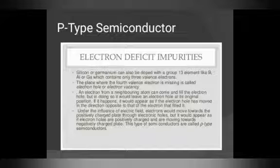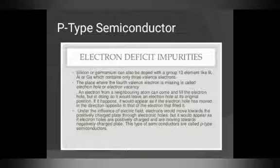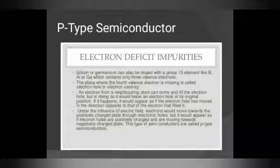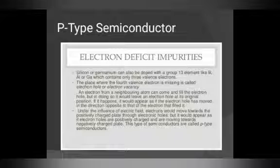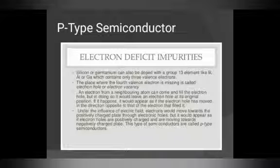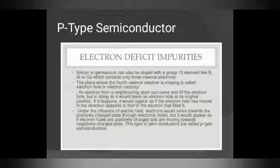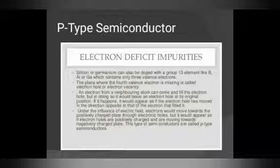Similarly, p-type semiconductor involves electron-deficient doping. Silicon and germanium can be doped with group 13 elements like boron, aluminium, and gallium, which contain only three valence electrons. When they form bonds, the place where the fourth valence electron is missing creates an electron hole — a positive hole. An electron from a neighbouring atom can come and fill that electron hole, but it leaves an electron hole at its original position. This hole moves in the direction opposite to the electron under the influence of electric field, forming a p-type semiconductor, where p stands for positive.